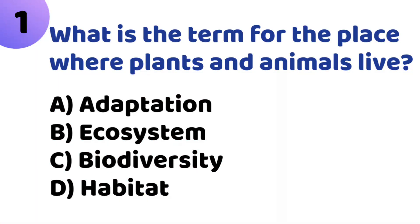First question: What is the term for the place where plants and animals live? Option A: Adaptation. Option B: Ecosystem. Option C: Biodiversity. Option D: Habitat. The correct answer is Option D, Habitat.